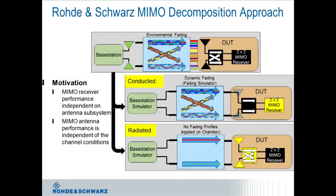From our perspective, in order to determine good versus bad MIMO performance, we developed a decomposition approach. Decomposition basically means that you're trying to solve a complex problem by breaking it up into sub-problems that are much easier to solve and then combining them later on.